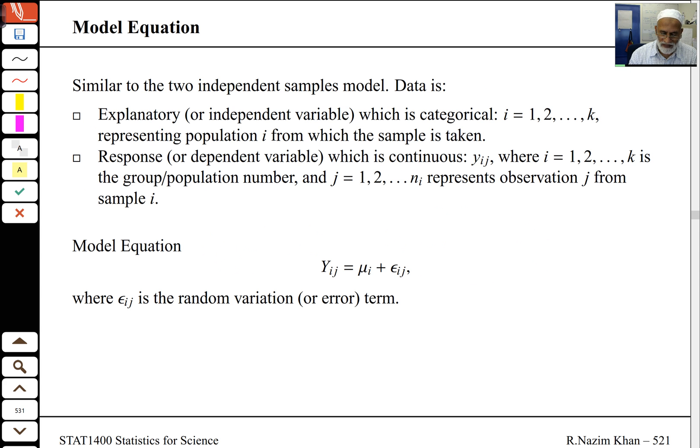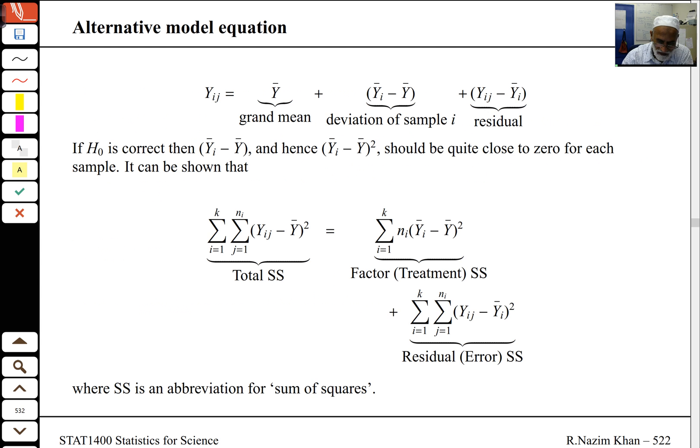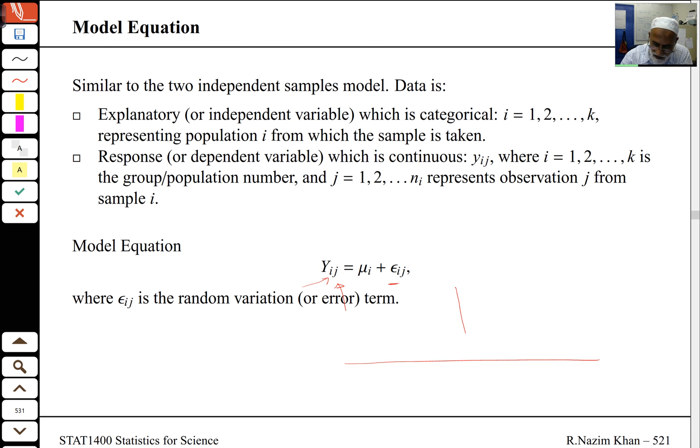The model equation is similar to the two-sample case. I've got k populations, 1 up to k, and the observations are yij, where i is population and j is the observation in that sample. Each of the populations has a mean mui, where i is 1 to k, and then there's this random error term. So essentially each observation arises from some mean, and the observation is just that mean plus some random variation or some random error eij.